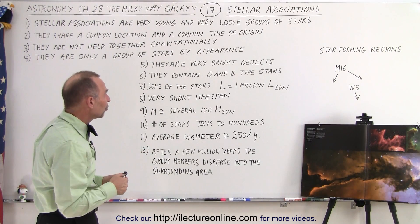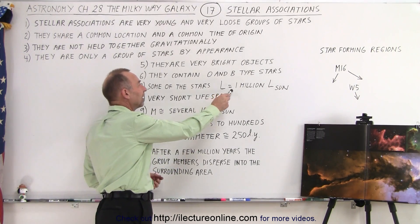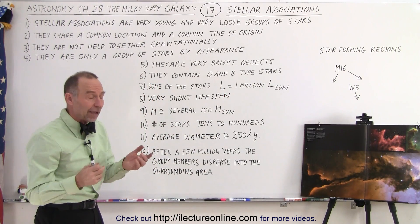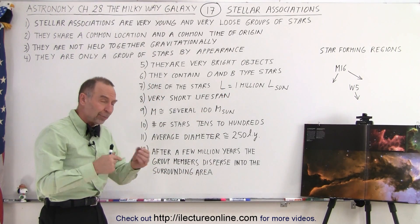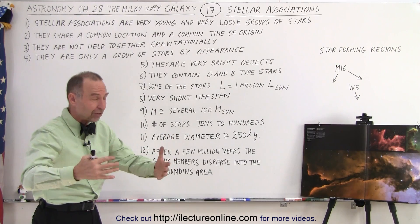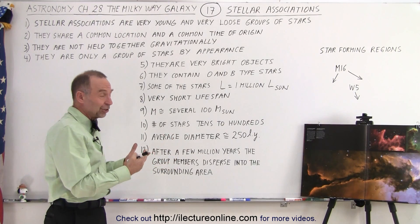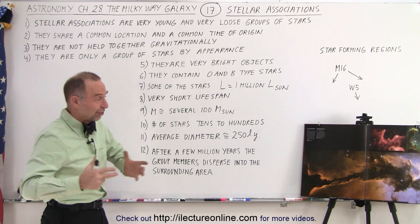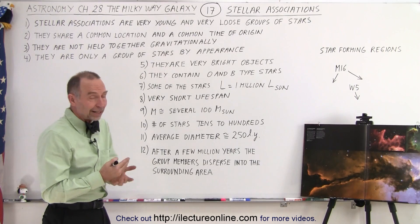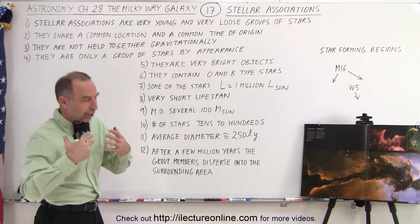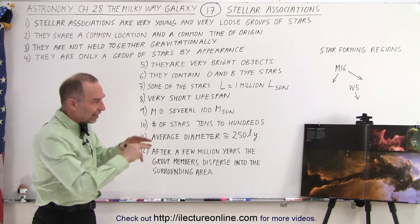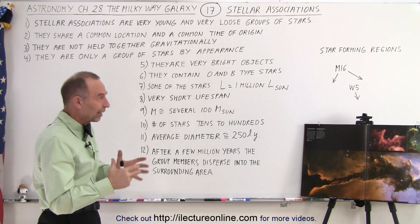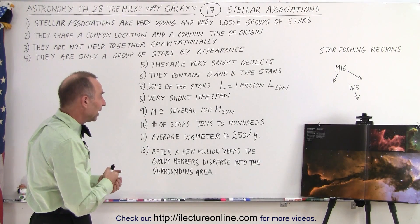Some of the stars have a luminosity equal to a million times the luminosity of the sun. If you have a dozen of those, you can imagine that's a grouping that is enormously bright. Even if not all of the stars are giving off that much light, as a group they do appear as a very, very bright object in the galaxy.